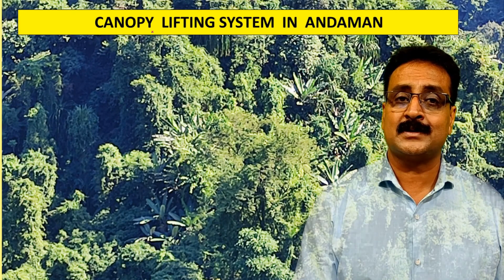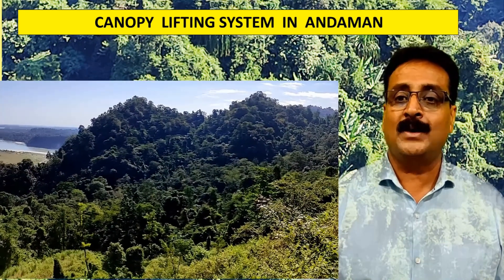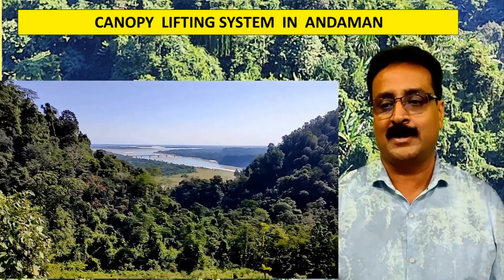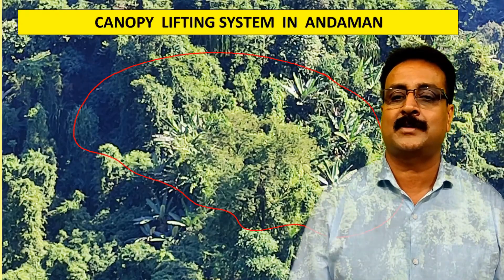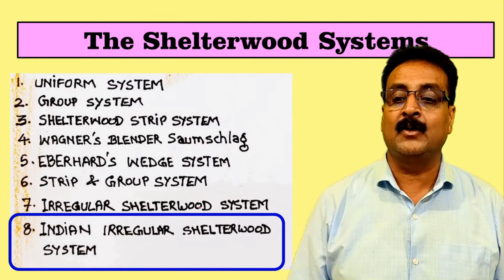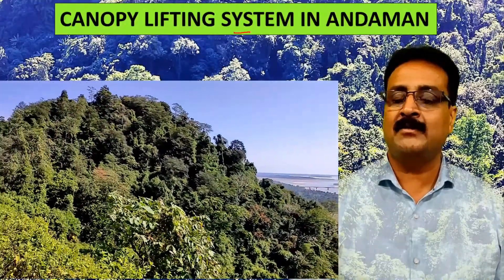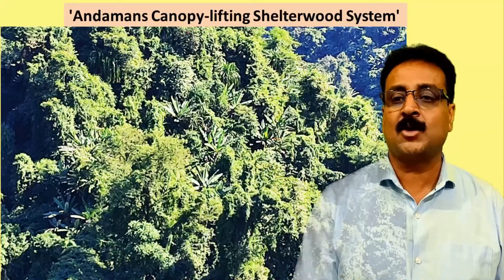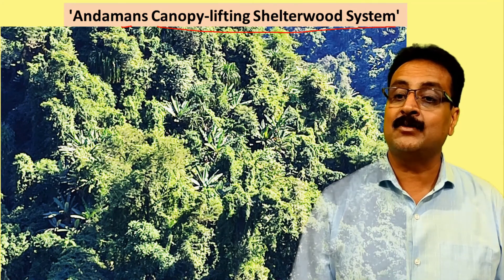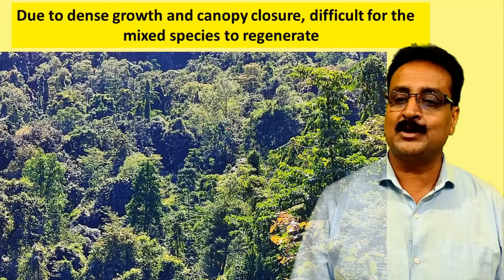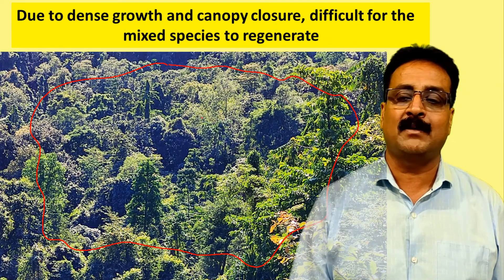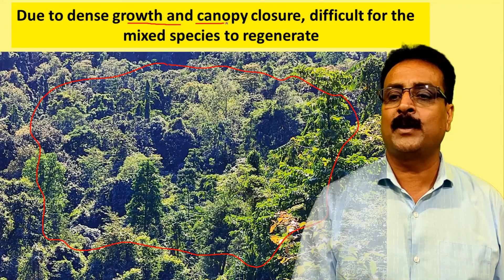A very common question in competitive exams is: what is the Canopy Lifting System in Andamans? The Andamans Canopy Lifting Shelterwood System is part of the Indian Irregular Shelterwood System. It applies to very thick, dense tropical rainforest-like conditions. The forest is so dense that canopy closure makes it very difficult for mixed species to regenerate.